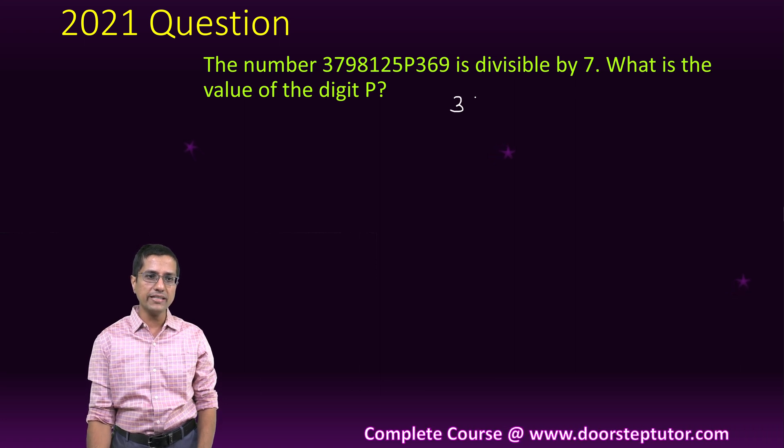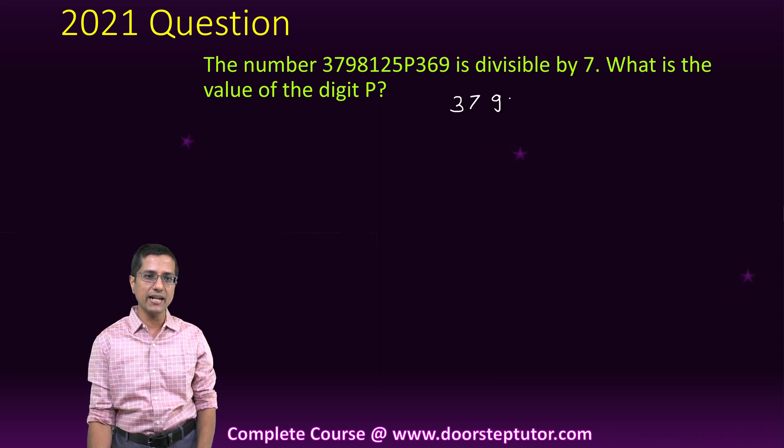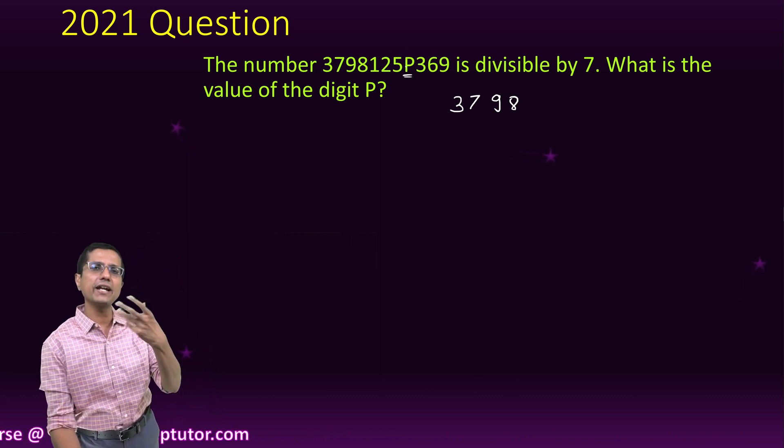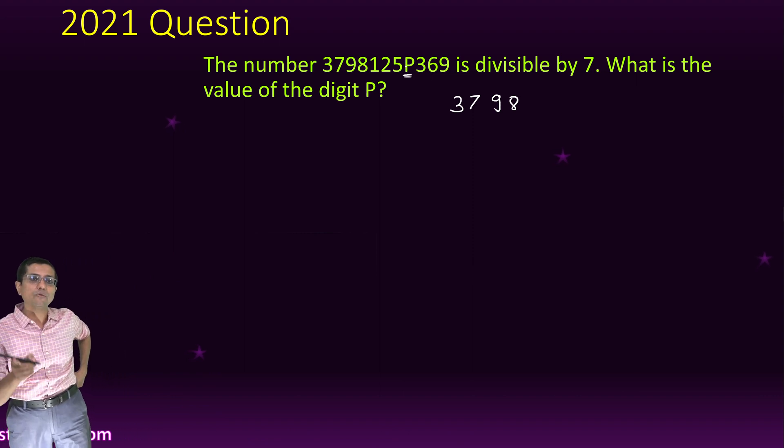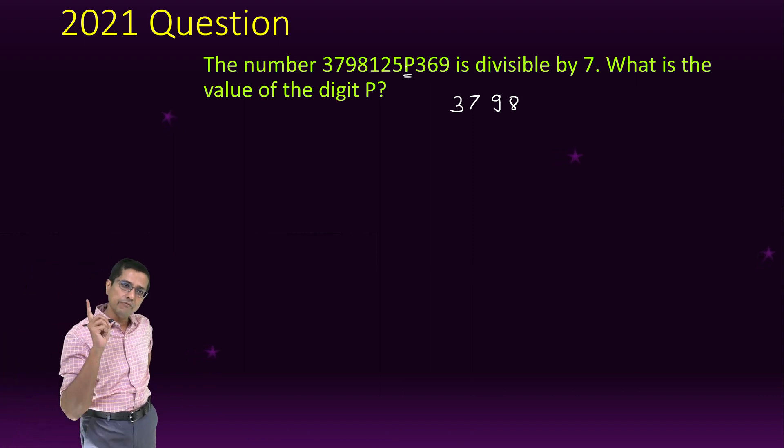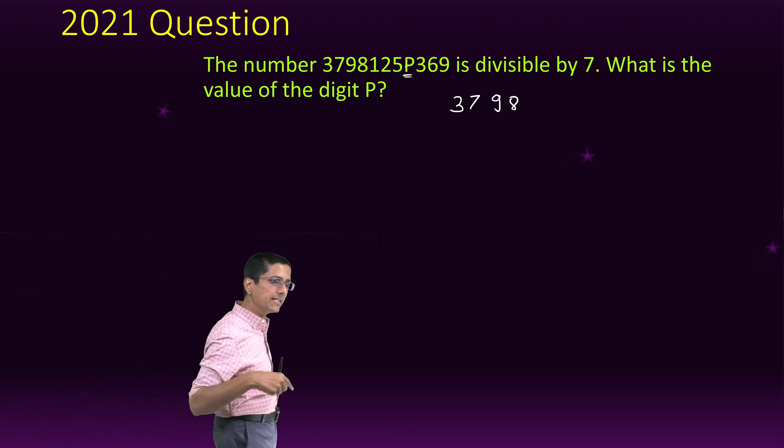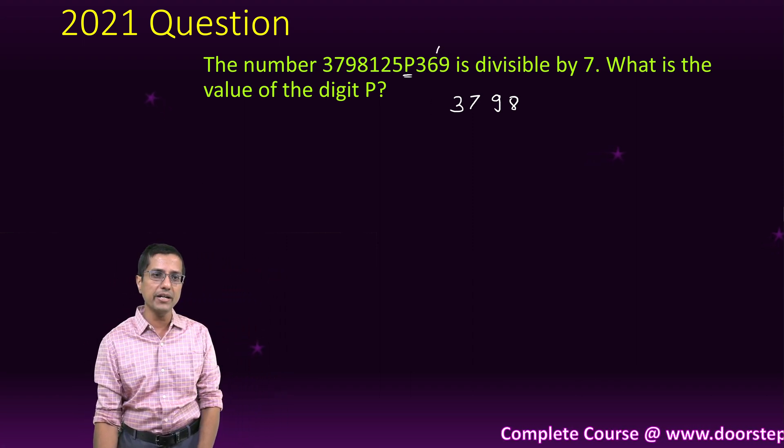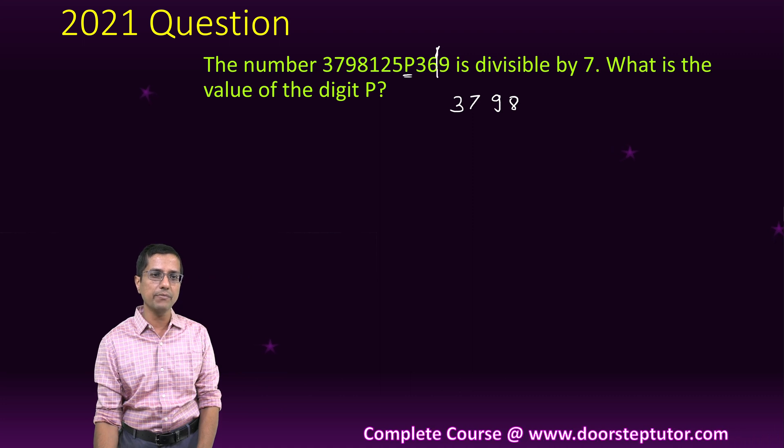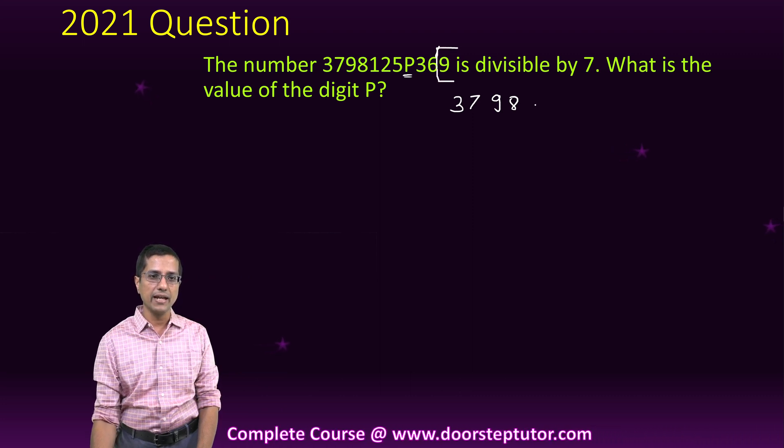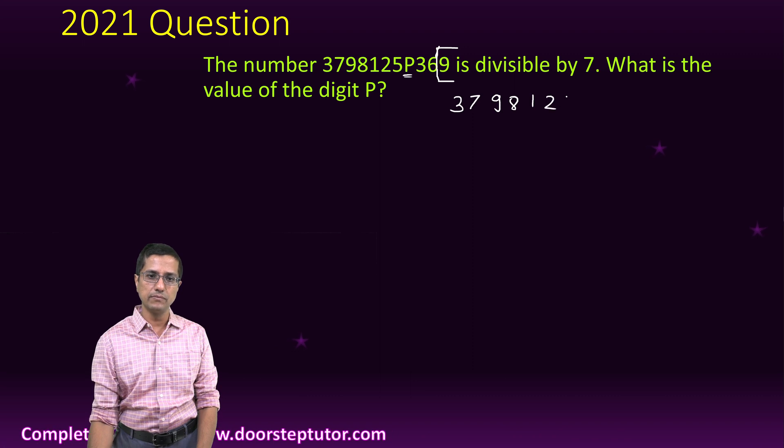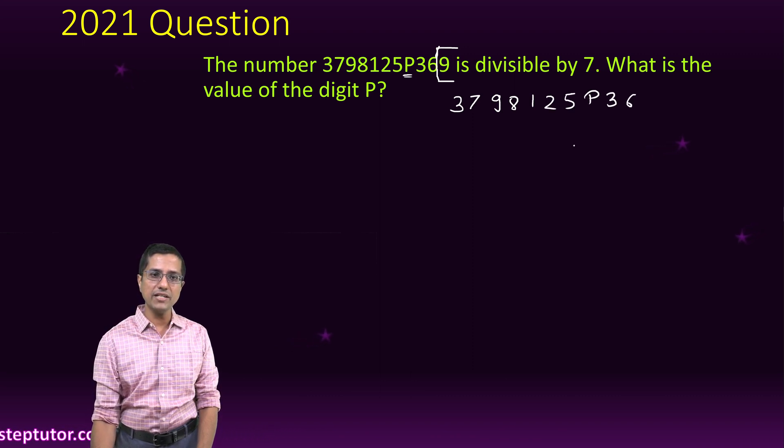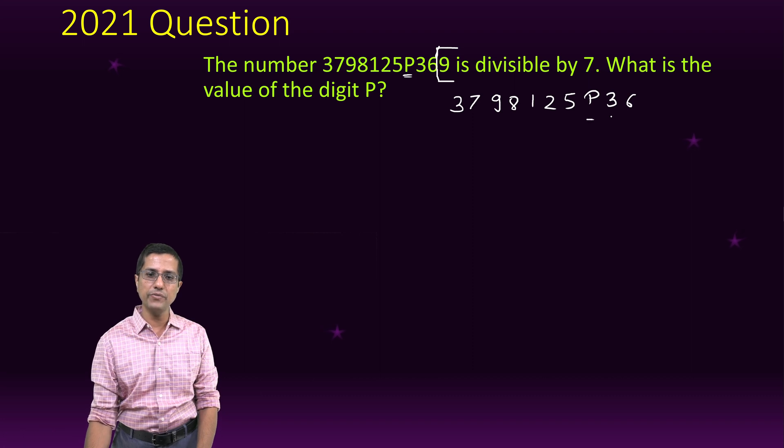What we have been told is that this 3798125P369 is divisible by 7 and we have to find out the value of p which would allow this number to be divisible by 7. What is the divisibility test of 7? We simply divide the number into two parts, remove the last digit and write the rest of the number. We double the last digit and subtract it from the rest of the number.